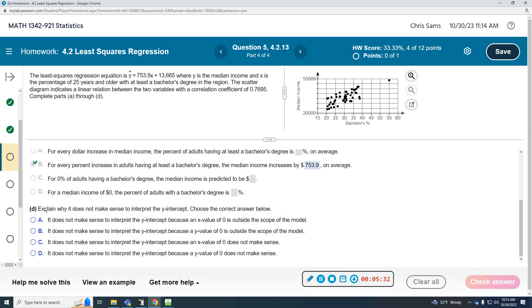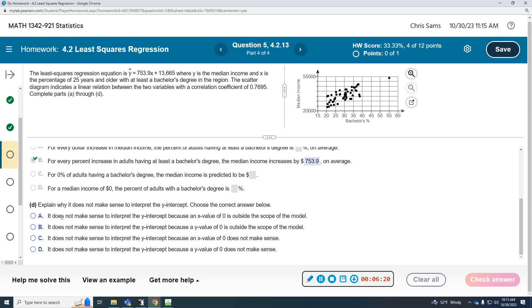And then D, last part, wants us to explain why it does not make sense to interpret the y-intercept and choose the correct answer below. The y-intercept would mean that if I put a zero in here, that means nobody has a bachelor's degree, that the median income would just be the $13,665. And we know that there are some jobs that don't require a bachelor's that start you higher. Some jobs are lower. So trying to say that this is the starting amount for everyone is not going to be true. So that's just my interpretation.